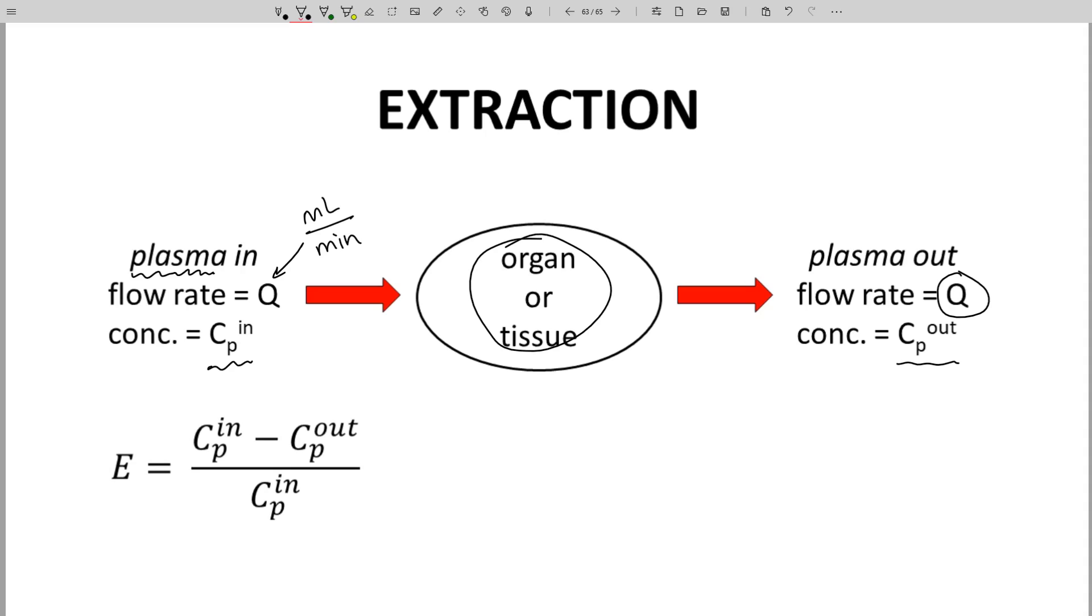The difference between Cp in and Cp out divided by Cp in defines the extraction ratio or E of the organ. E has a value between 0 and 1 and has no units.